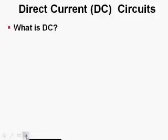Direct Current Circuits. What is DC? DC current, or direct current, is when electrons only flow in one direction.